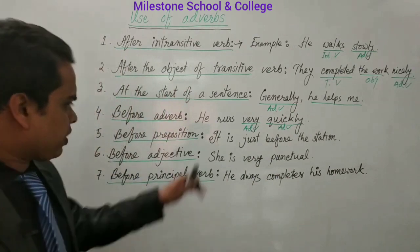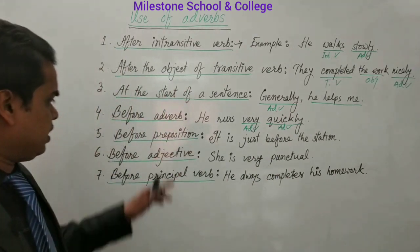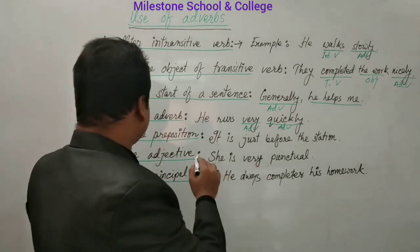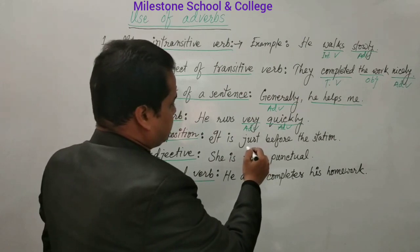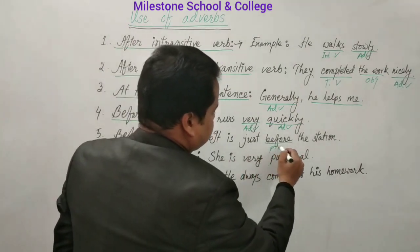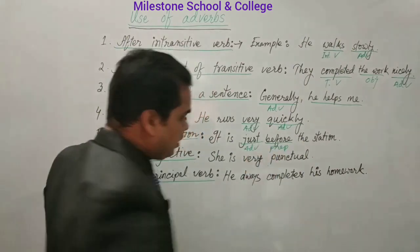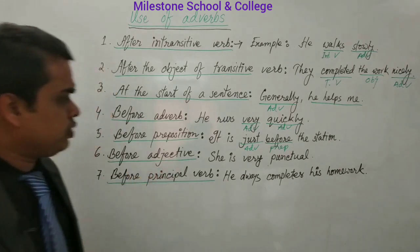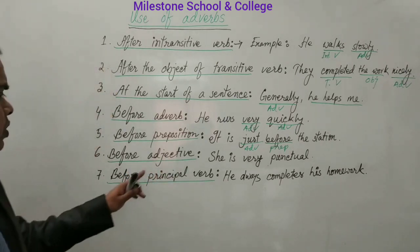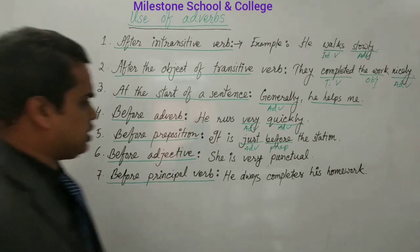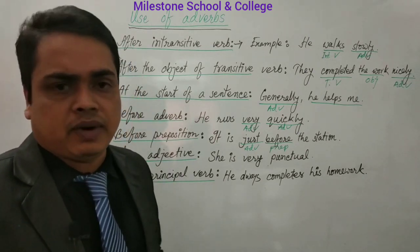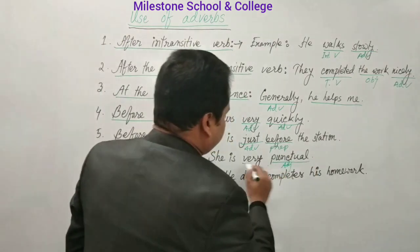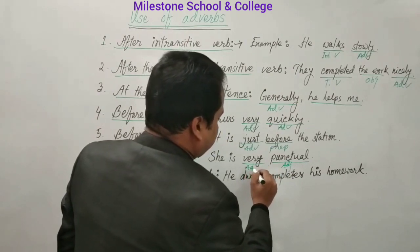An adverb modifies preposition also — it is used before the preposition. Before a preposition, we use adverb. Then, before an adjective, we can use an adverb. For example, 'punctual' is an adjective, and we are using an adverb before it.